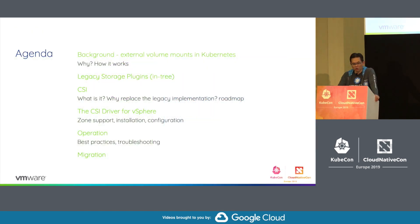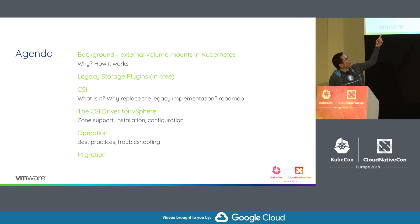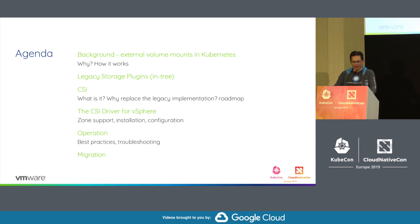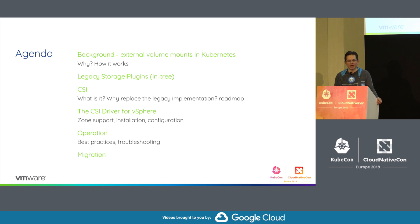Our agenda today — even though this was advertised as an intro, we're getting into deep dive territory. I'm going to rush through the history of how external volumes are supported in Kubernetes, briefly cover the legacy in-tree plugin, then move on to the container storage interface, which is the future and present of Kubernetes external volume mounts. We'll cover the CSI driver for vSphere, operational best practices, a demo by David, migration from in-tree to out-of-tree, and troubleshooting.